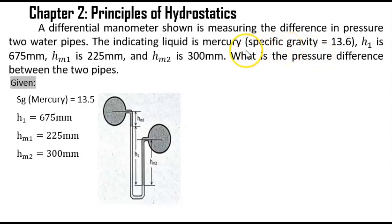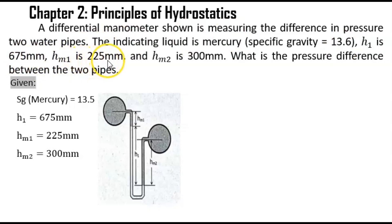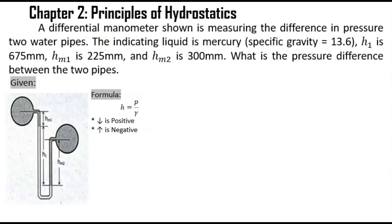First, we must identify our given values. As indicated, we have the specific gravity of mercury which is equal to 13.6, height 1 which is equal to 675 millimeters, height m1 which is equal to 225 millimeters, and height m2 which is equal to 300 millimeters. Since we're going to determine the pressure difference between the two pipes, we can use the formula of pressure head.